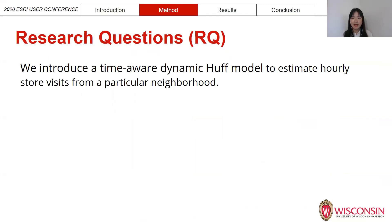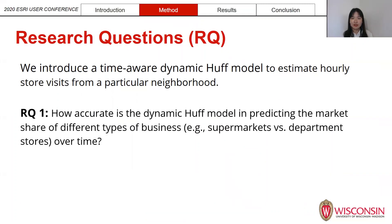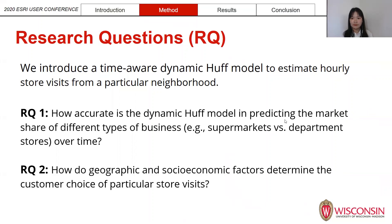We would like to answer two research questions. The first one is how accurate is the dynamic Huff model in predicting the market share of different types of businesses — for example supermarkets versus department stores. The second research question is how do geographic and socioeconomic factors determine the customer's choice of particular store visits.